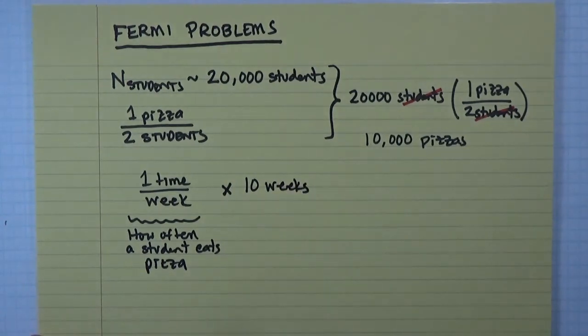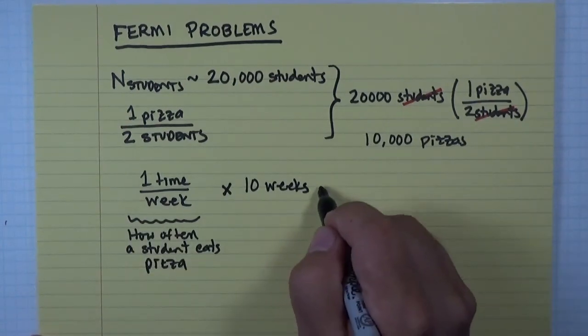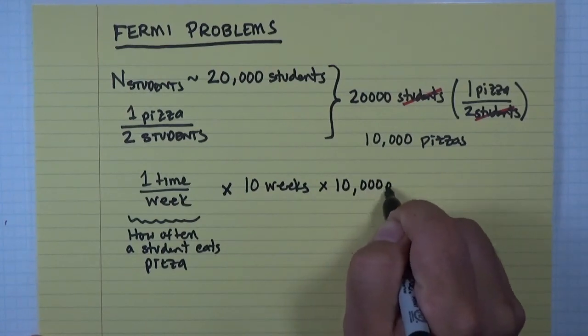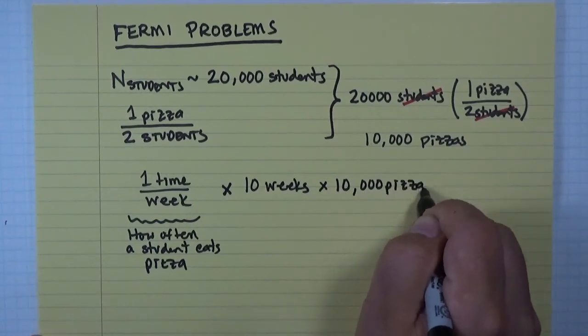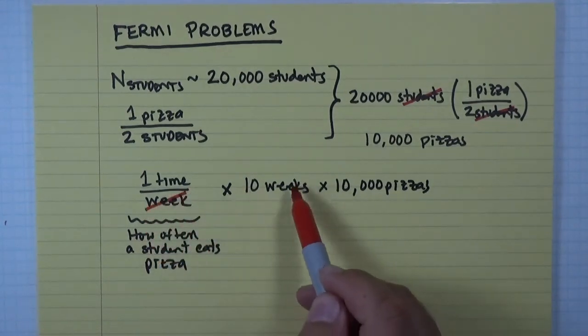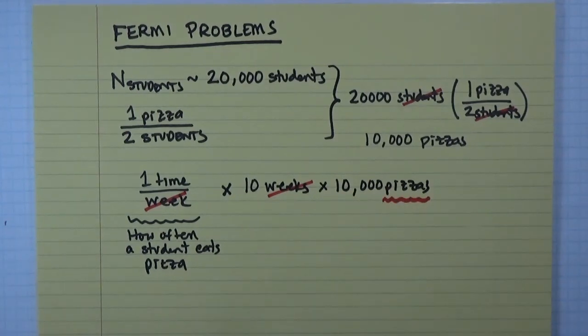And I'm going to multiply that by the number of pizzas I need to feed students each time. So that is times ten thousand pizzas. So again, this is just multiplying numbers together. All the weeks cancel out and I'm left with what I care about, which is the number of pizzas per semester.